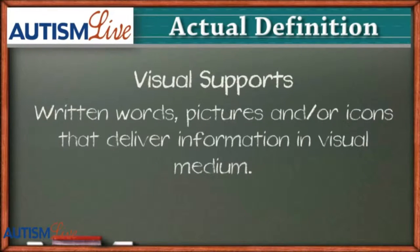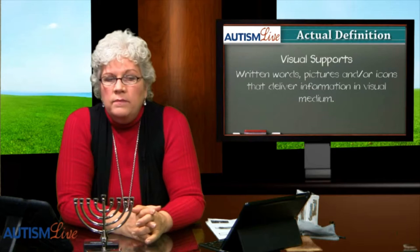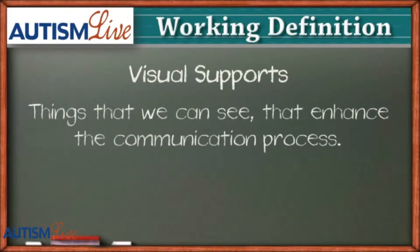Today's jargon term, as you see on the screen, is 'visual supports.' What exactly are we talking about with autism? The actual definition is: written words, pictures, and/or icons that deliver information in a visual medium. But from that definition, it's not entirely clear how we use it, what it does, or why it's so important. So let's look at our working definition: things that we can see that enhance the communication process.